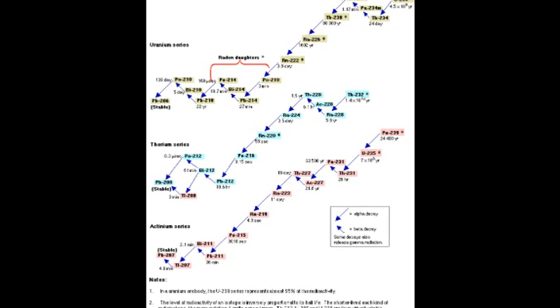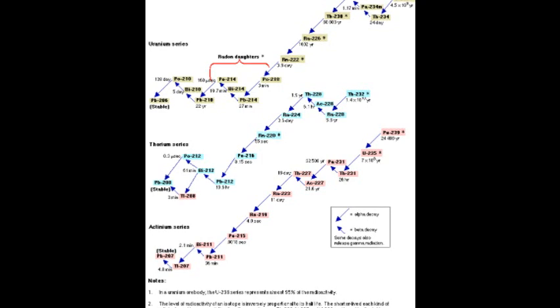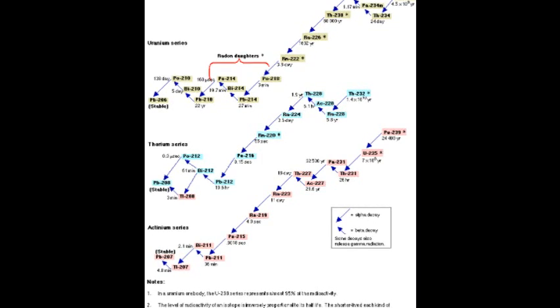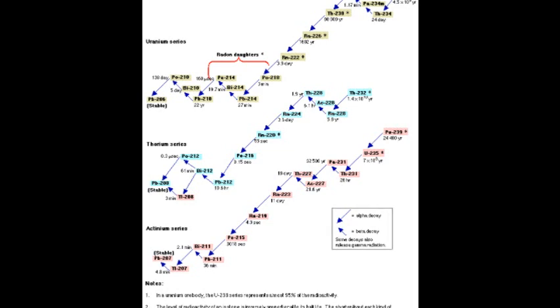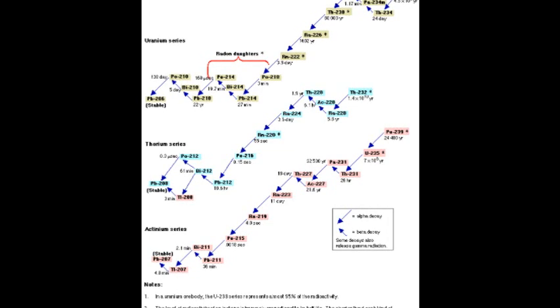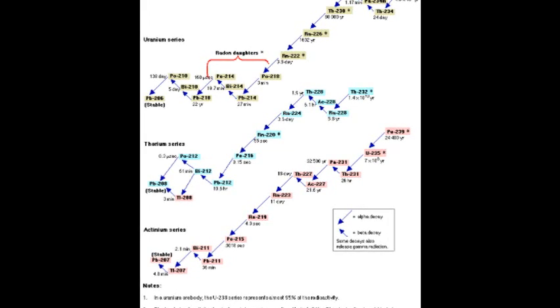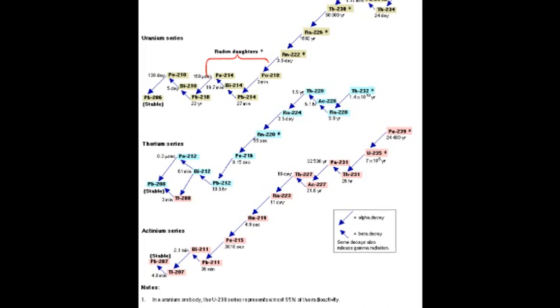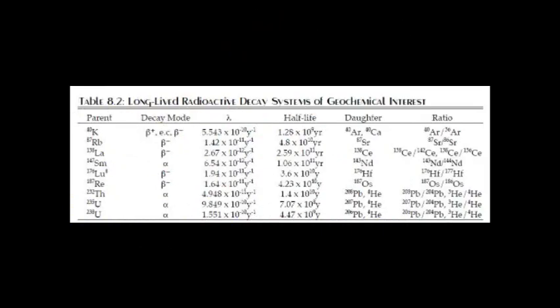It was not only the heat released by the decay of uranium that proved important, however. As the physics of nuclear decay was investigated further, the rate at which many — but not all — isotopes decay was found to be a constant. This meant that measurements of the relative concentrations of different isotopes of the same elements in material today could, in theory, provide a reliable record of geological time. With the discovery of isotope systems with half-lives, abundances, and chemical affinities relevant to geological systems, the application of the basic principles of nuclear decay to earth sciences began to take shape.